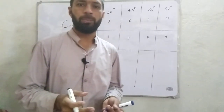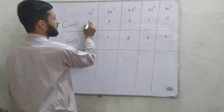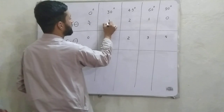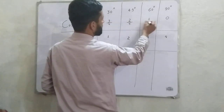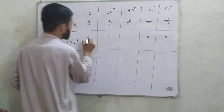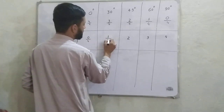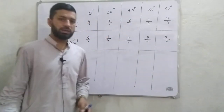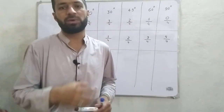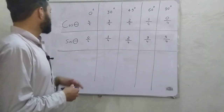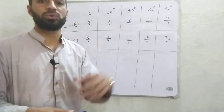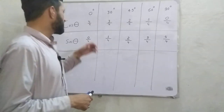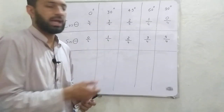Now divide all these numbers by the maximum, which is 4. So every value is divided by 4. In the first step, we took numbers from 4 down to 0 for cos theta, and from 0 up to 4 for sin theta — one in descending order and the other in ascending order. In the second step, we divide all numbers by the highest, which is 4.